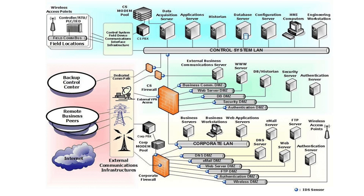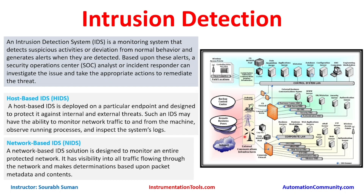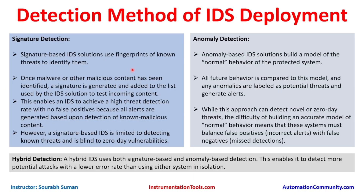The network-based IDS picks up all communications across the network. For example, communication from an email server going to the external communication infrastructure — whatever communication happens through the complete network will be captured and sent to the IDS for analysis. It will analyze what type of traffic is flowing, what data is inside that traffic, and whether that communication could be a vulnerability or an exploit to our system.